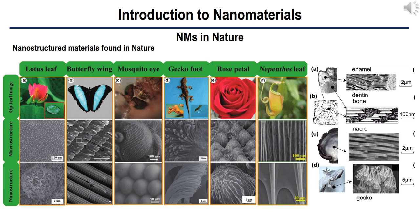Nanomaterials are frequently found in nature. From insects to animals, nanomaterials have been the optimized strategy for the survival and evolution of many life forms on Earth. For example, the lotus leaf is well known to repel water droplets on its surface. This is due mainly to the fact that the leaf has a chemically and physically optimized surface structure. The leaf has a hydrophobic surface, meaning the chemical compound composing the surface has high enthalpic interaction with water molecules, making the interface energy between water and the leaf surface high. Therefore, water molecules minimize free energy by increasing the contact angle of the droplet at the leaf surface.